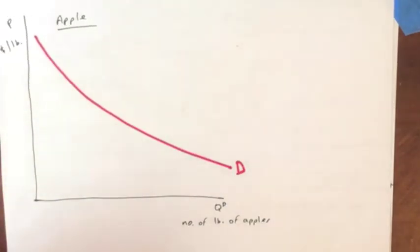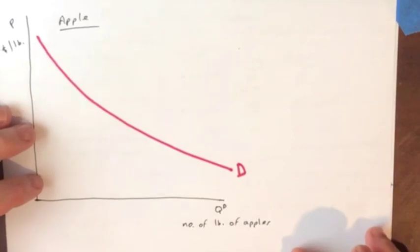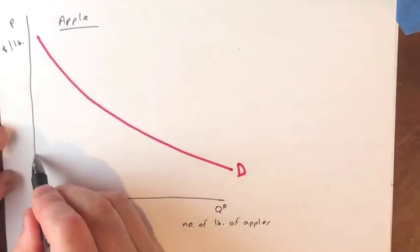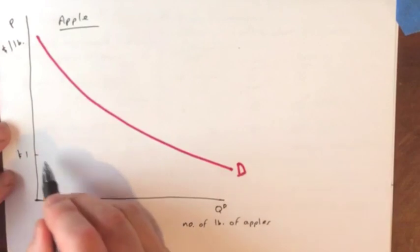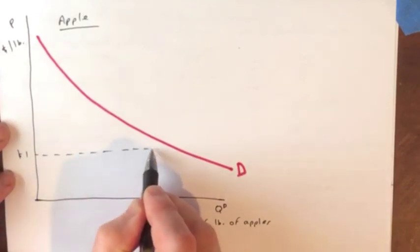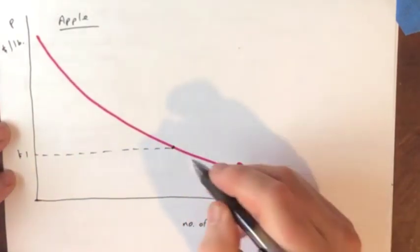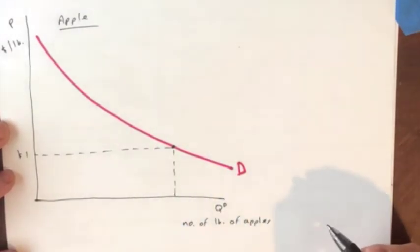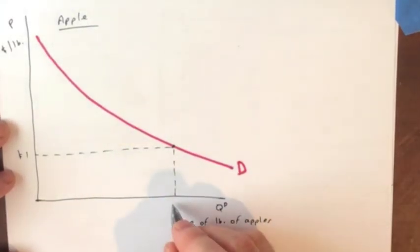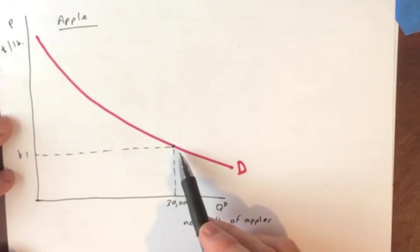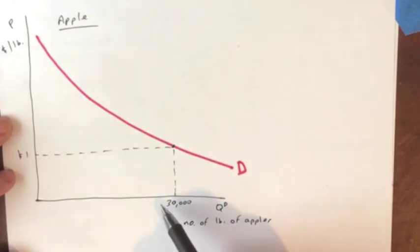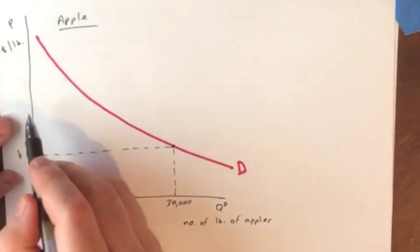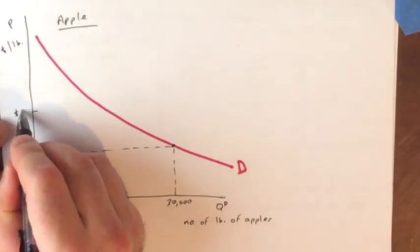If the law of demand holds, we have a downward sloping demand curve. We're going to label it D. And what it means is, at any given price that we can think of, let's say the price is one dollar, we have a corresponding quantity demanded at that price. So let's say, in this case, it's thirty thousand. At the price of one dollar, individuals in this market are willing and able to purchase thirty thousand apples.